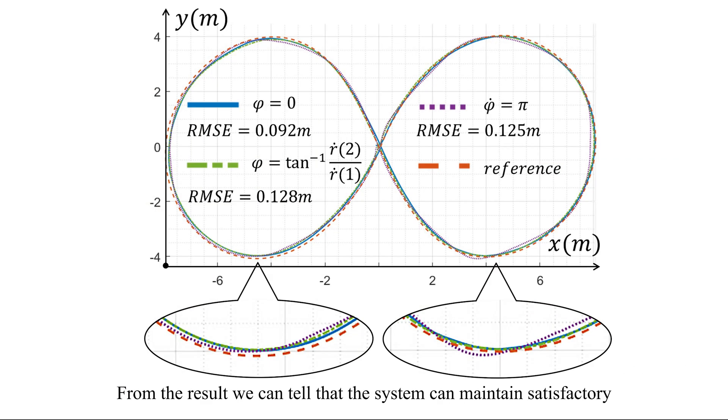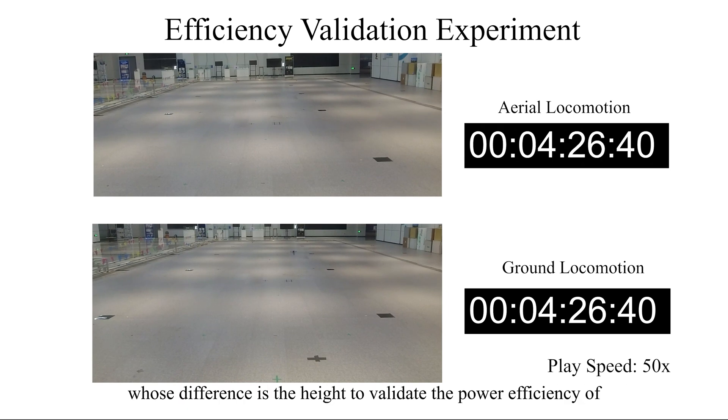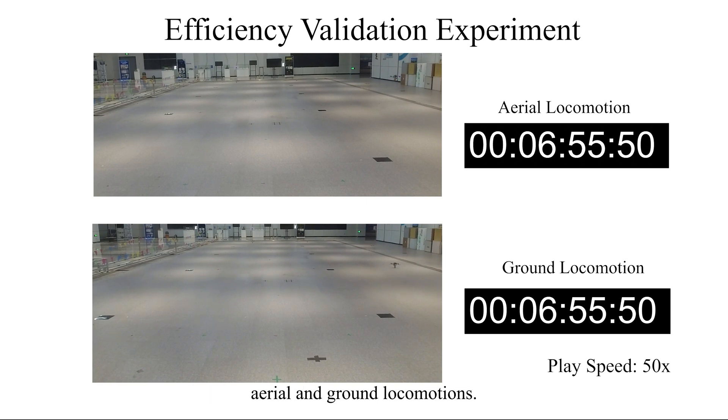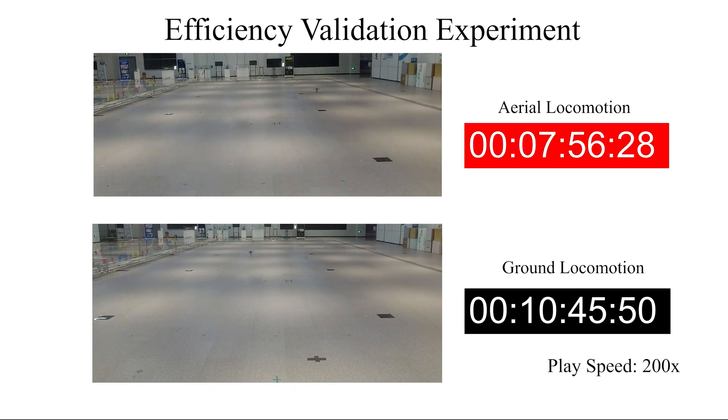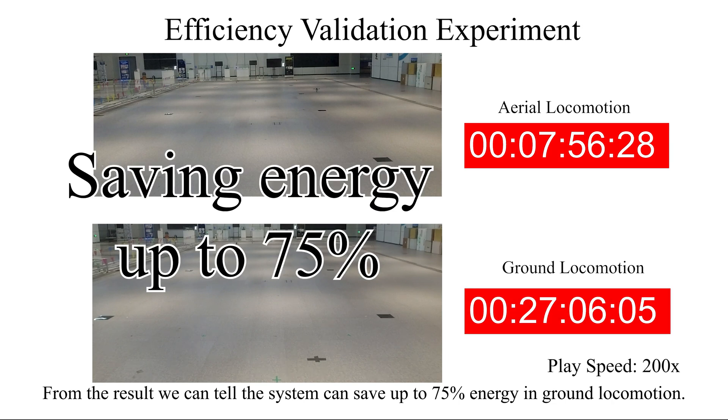From the result, we can tell that the system can maintain satisfactory control performance while executing different yaw angle commands. In this experiment, we have the vehicle execute two H-shaped trajectories whose difference is the height to validate the power efficiency of aerial and ground locomotions. From the result, we can tell the system can save up to 75% energy in ground locomotion.